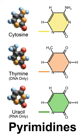In March 2015, NASA Ames scientists reported that, for the first time, complex DNA and RNA organic compounds of life, including uracil, cytosine, and thymine, have been formed in the laboratory under outer space conditions, using starting chemicals such as pyrimidine found in meteorites. Pyrimidine, like polycyclic aromatic hydrocarbons, the most carbon-rich chemical found in the universe, may have been formed in red giants or in interstellar dust and gas clouds.